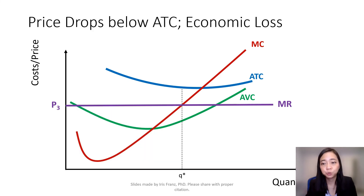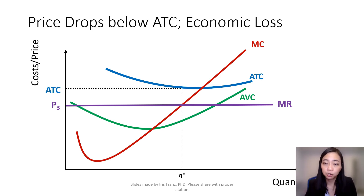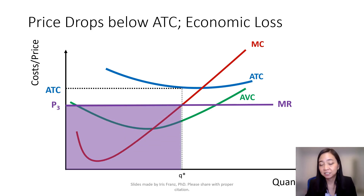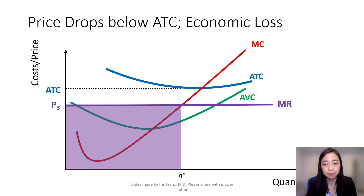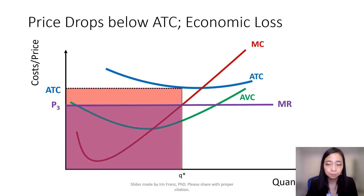On this slide, I'm going to show you where to find economic loss. Given our quantity Q star, we can find our average total cost and see where our total revenue is — it is still the purple shaded area. Our total cost is equal to average total cost times quantity Q star, shown as the red shaded area. The difference between total cost and total revenue will be our economic loss.